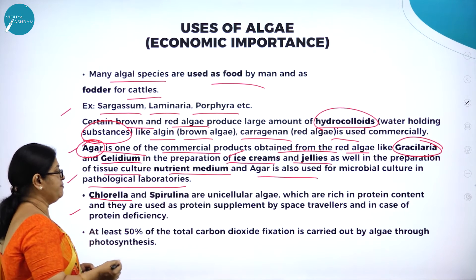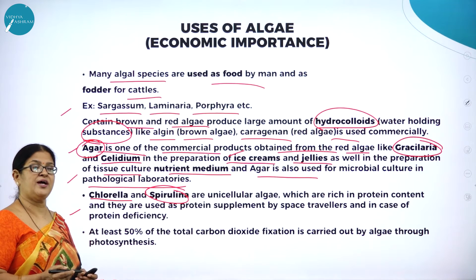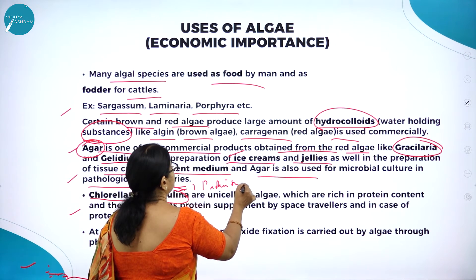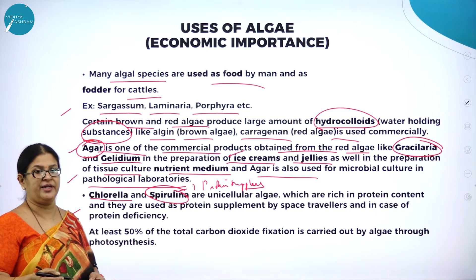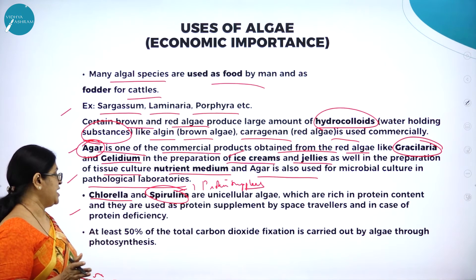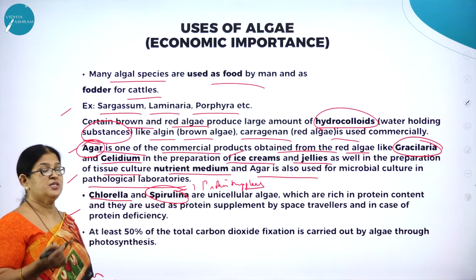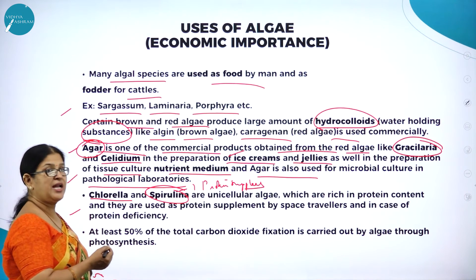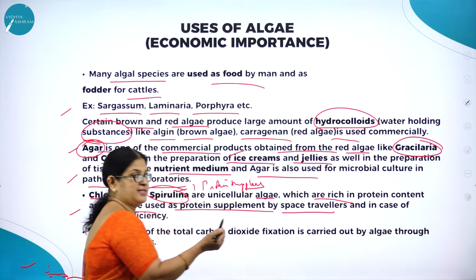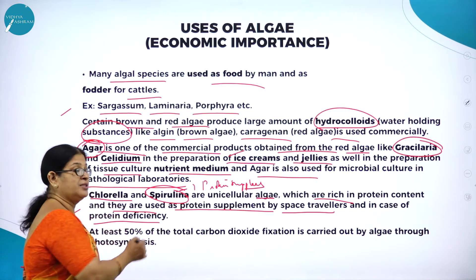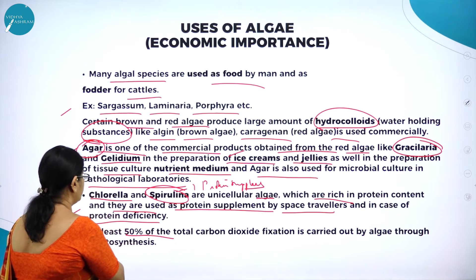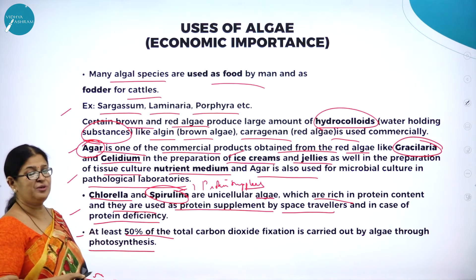A green algae called Chlorella and Spirulina are very important. You might have come across Spirulina tablets — they are used as a protein supplement. If a body is lacking in protein, Spirulina tablets are very rich in protein and balance the protein content in the body. Even cosmonauts take Spirulina as food. Chlorella and Spirulina are unicellular algae rich in protein, used as protein supplements by space travelers and people with protein deficiency.